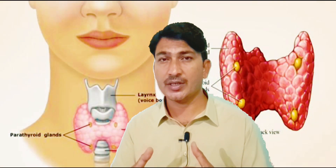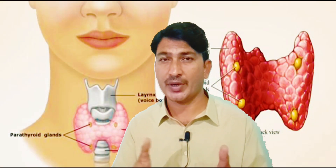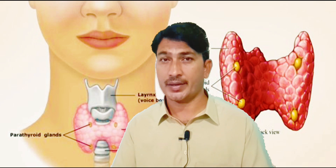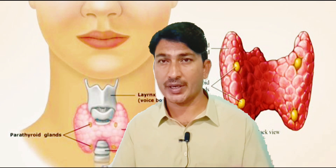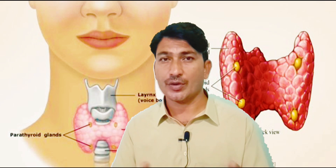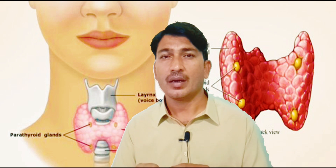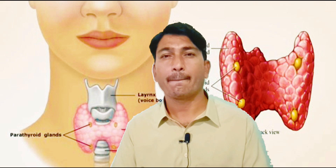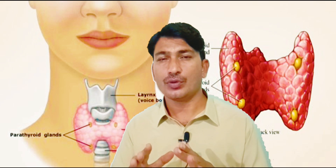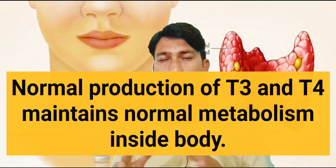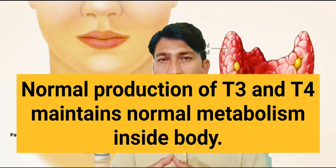When the body needs energy, these hormones break down these substances and provide energy, so that we feel hunger. This is how we feel hungry when the body needs energy — the intake of glucose is broken down under the influence of thyroid hormones. When both these hormones are released normally, they control the metabolic rate of the body and keep our body normal.